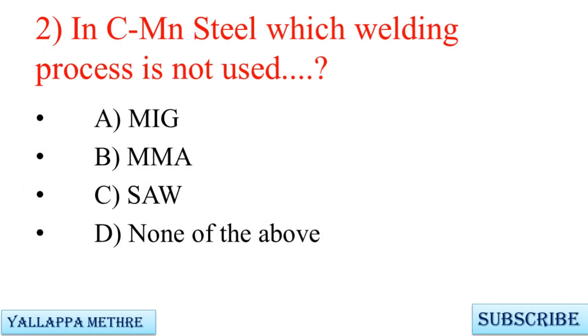Question 2: In carbon manganese steel, which welding process is not used? A. MIG, B. MMA, C. SAW, D. None of the above.